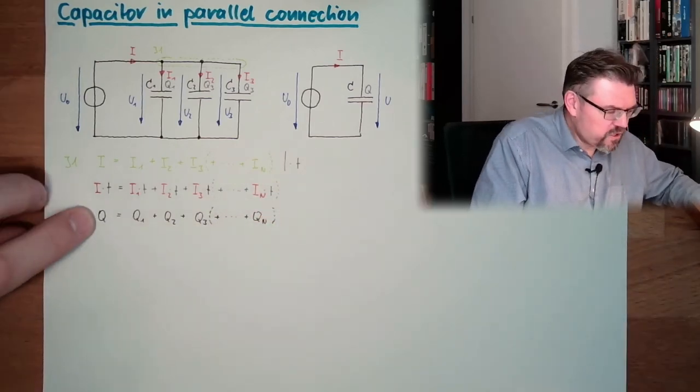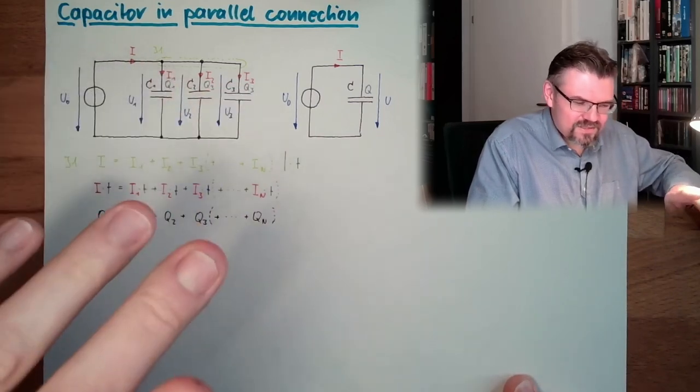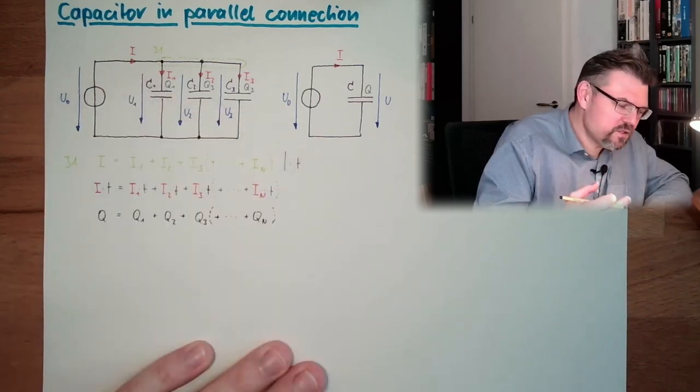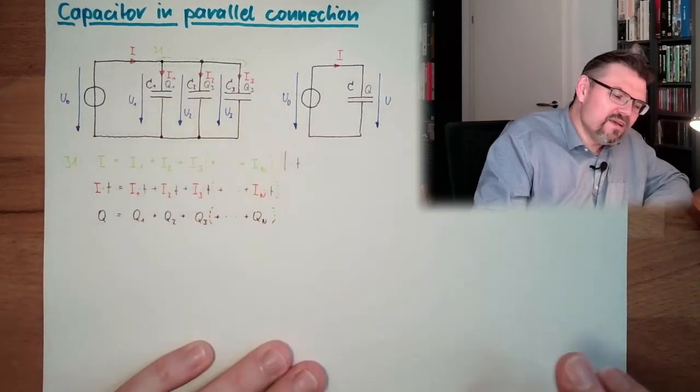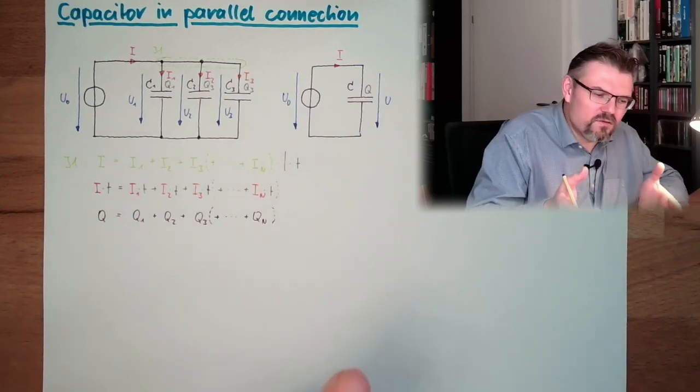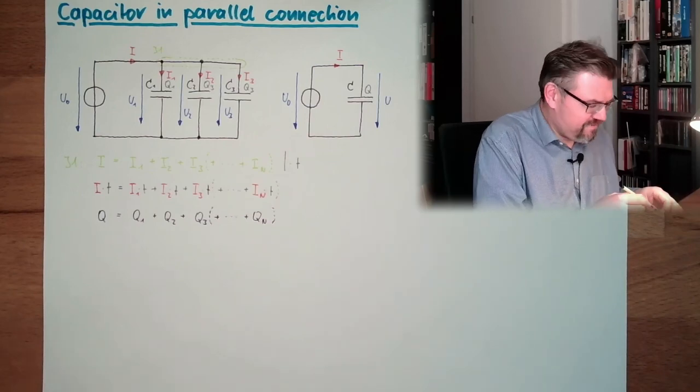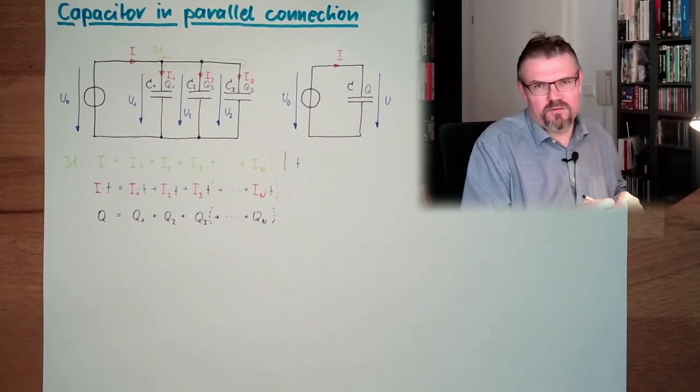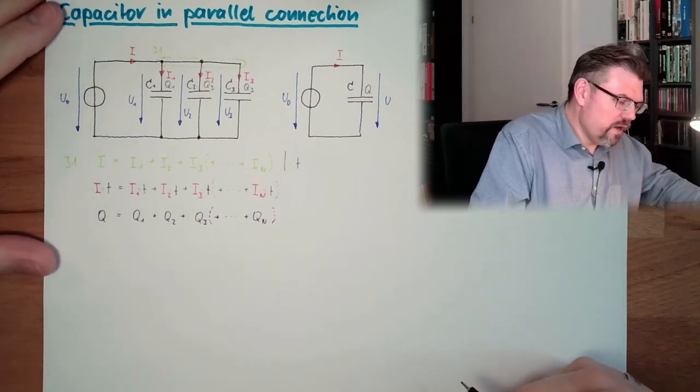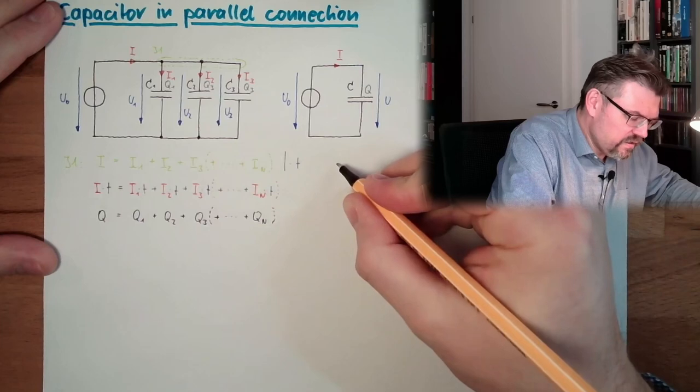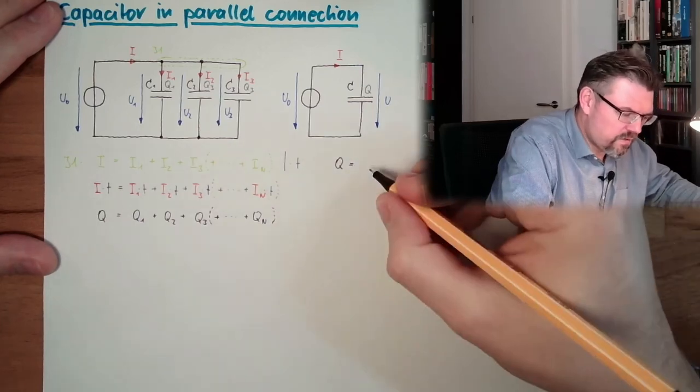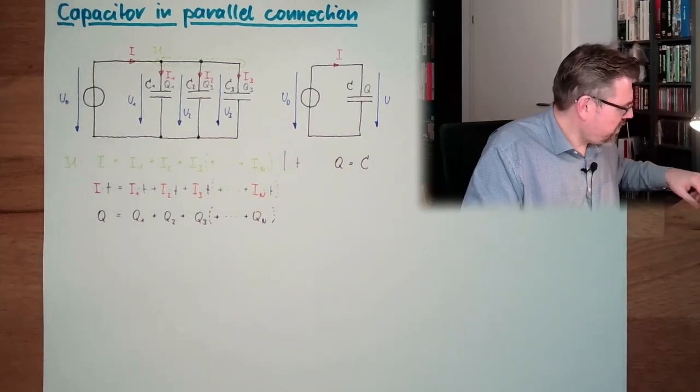So the complete charge is the sum of all... And it's logical. If we are transporting an amount of charge, then this charge is divided into sub-charges. And those sub-charges in total, in sum, must be the total transported charge. I mean, this should not be much of a surprise.